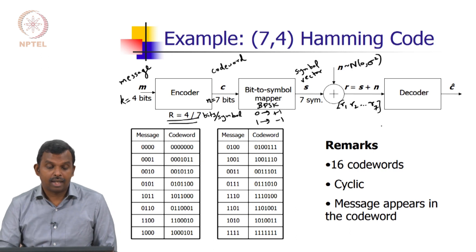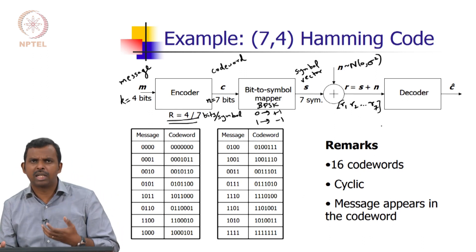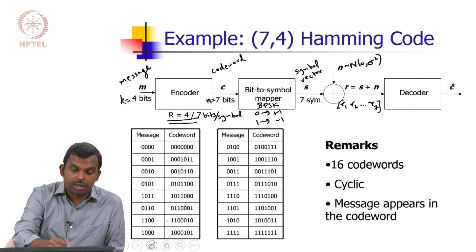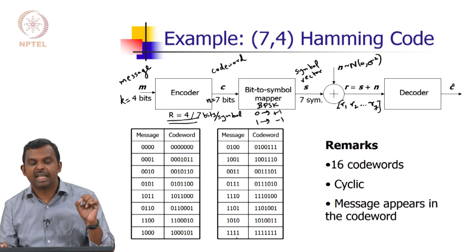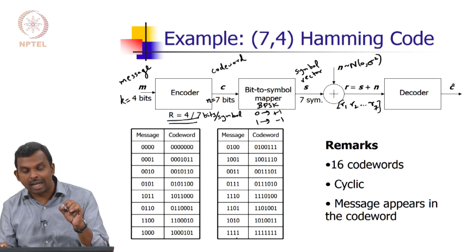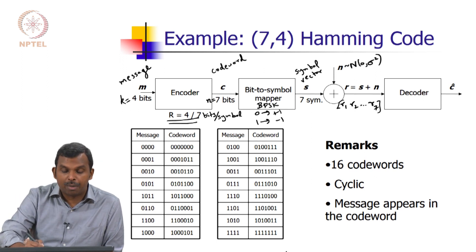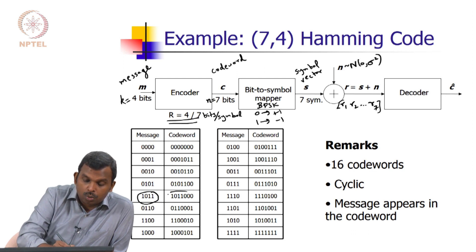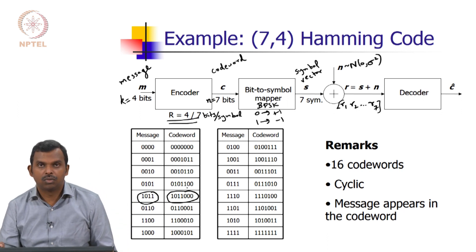What is the Hamming code and how does encoding work? The encoder can be written as a table. You have 4-bit messages — there are 16 different possibilities, from 0,0,0,0 all the way to 1,1,1,1. Each of these 16 message vectors gets mapped into a unique codeword. For example, if your message is 1,0,1,1, you put out a codeword 1,0,1,1,0,0,0.